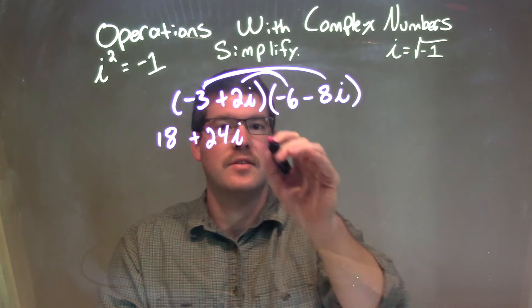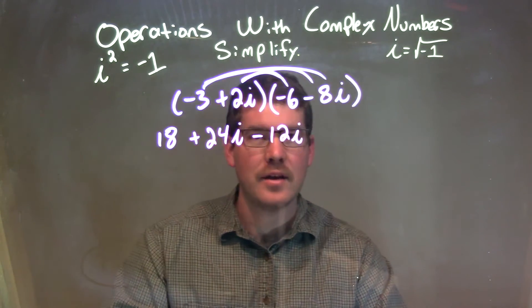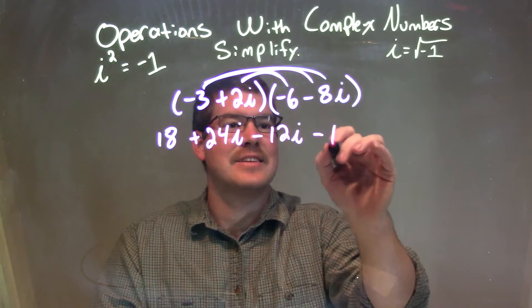2i times negative 6 is negative 12i, and 2i times negative 8i is negative 16i.